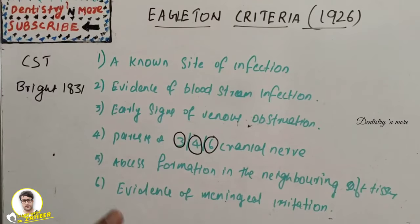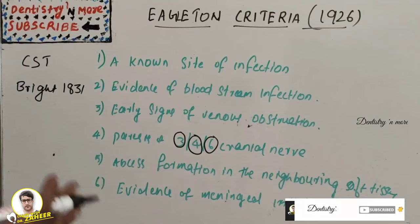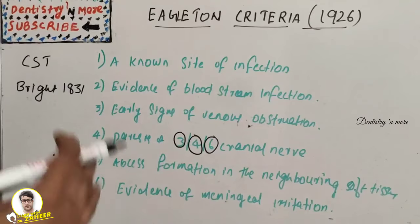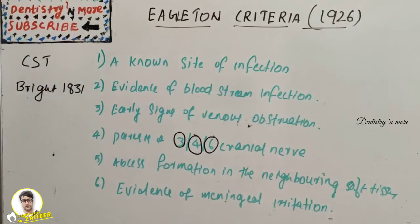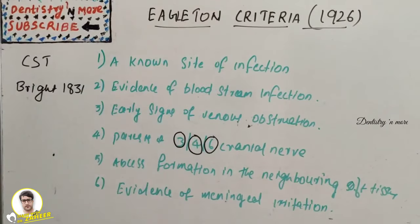Infection can also arise from the plexus of veins surrounding the internal carotid artery. Eagleton put forward six criteria for establishment of the diagnosis of CST. This is a very commonly asked short note in oral surgery. The first criterion is a known site of infection.